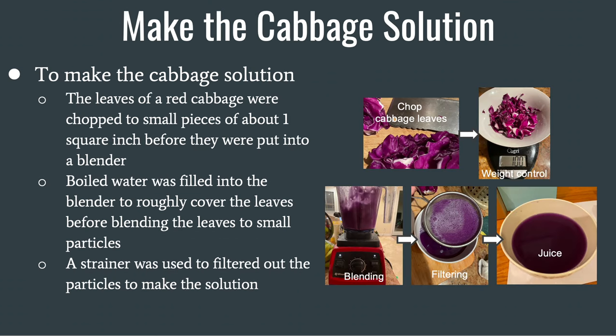In order to make the cabbage solution, I chopped the leaves of the red cabbage into small pieces about one square inch before they were put into a blender. I then boiled water. The boiled water was filled into the blender to roughly cover the leaves before blending the leaves to small particles. A strainer was then used to filter out the particles in order to make the juice.